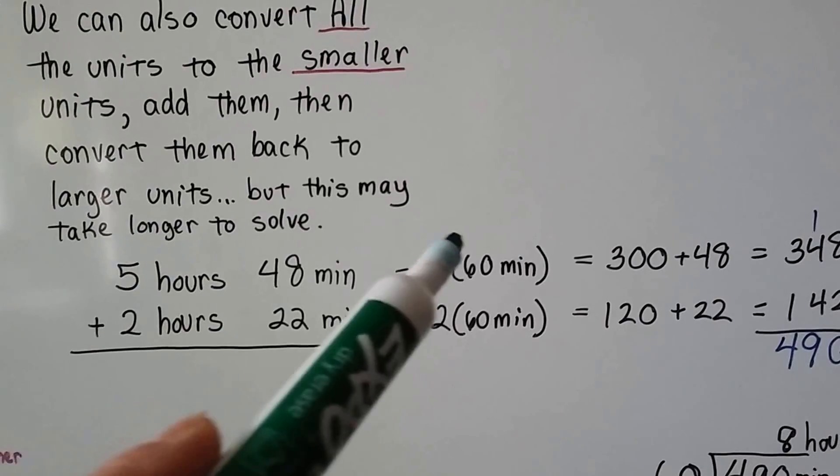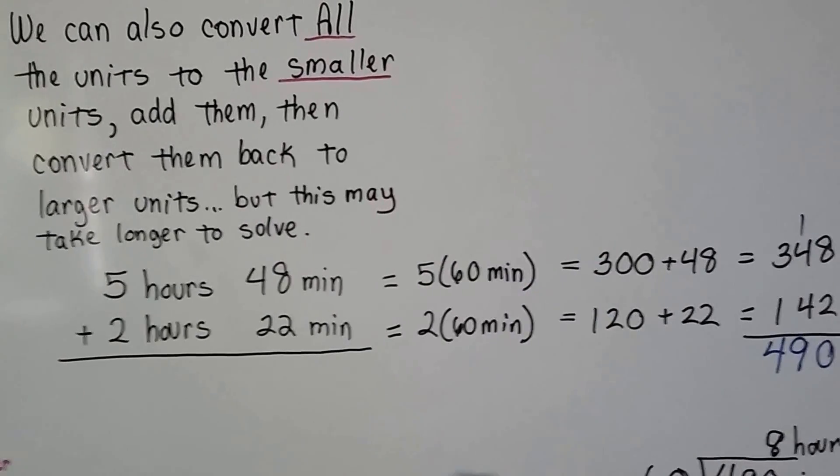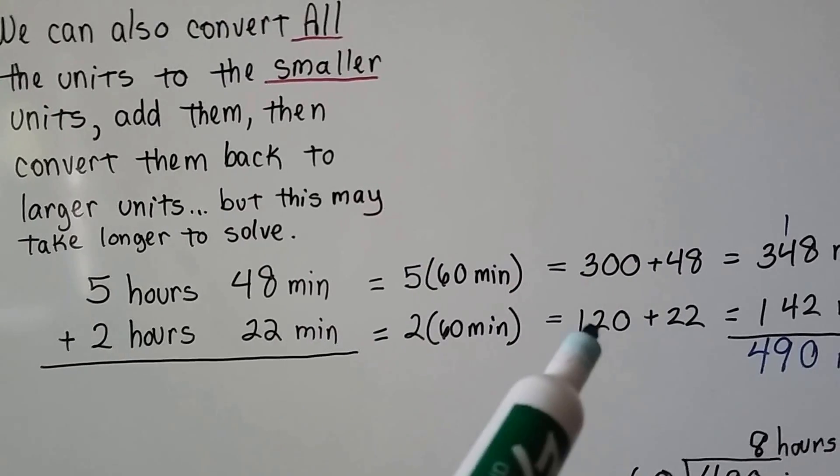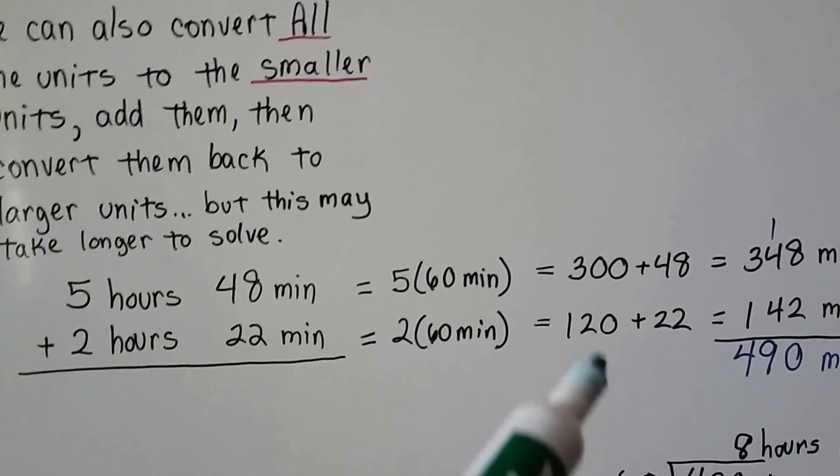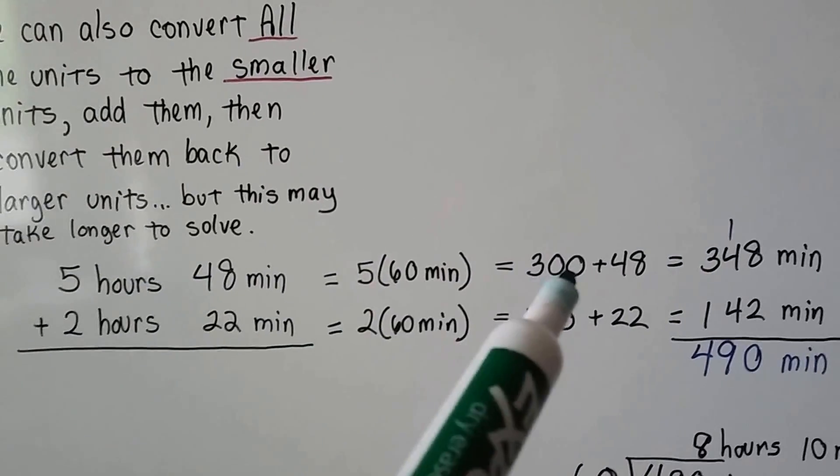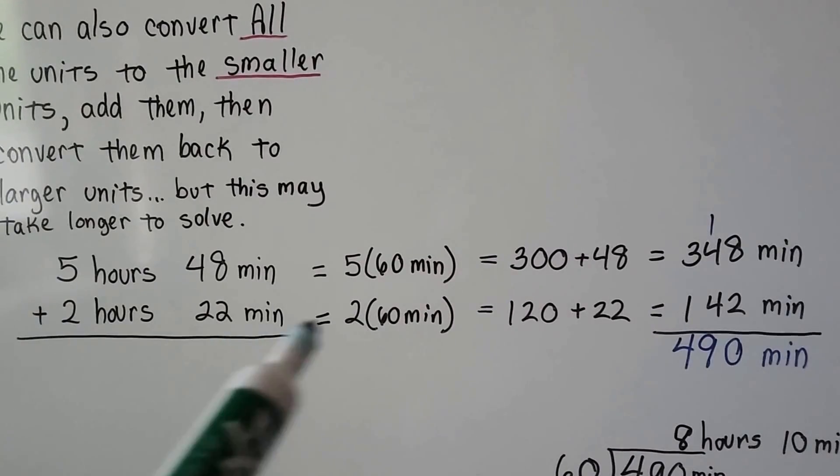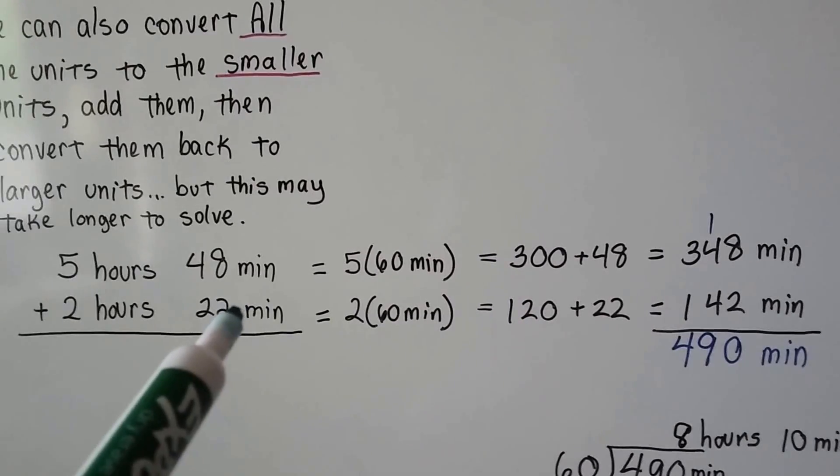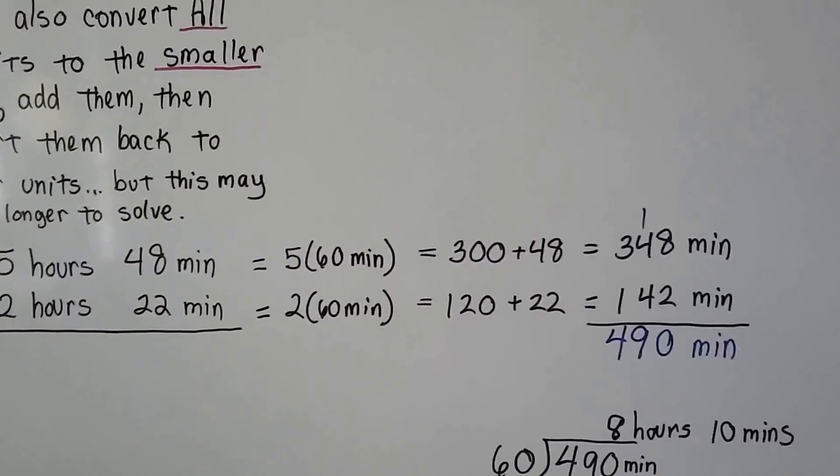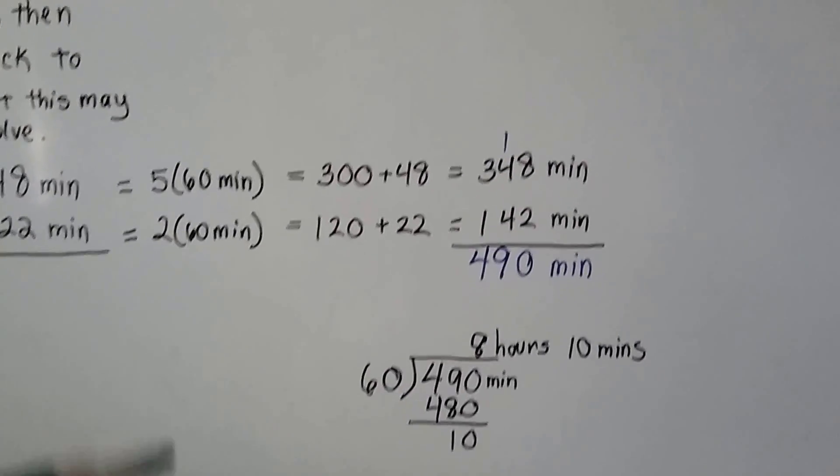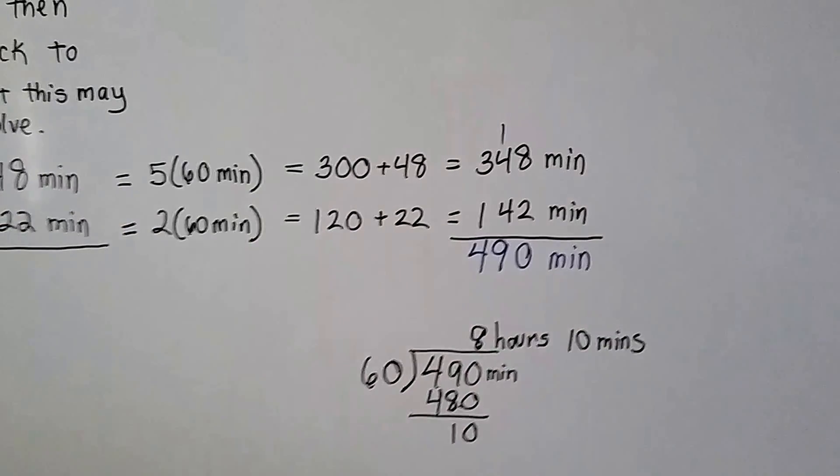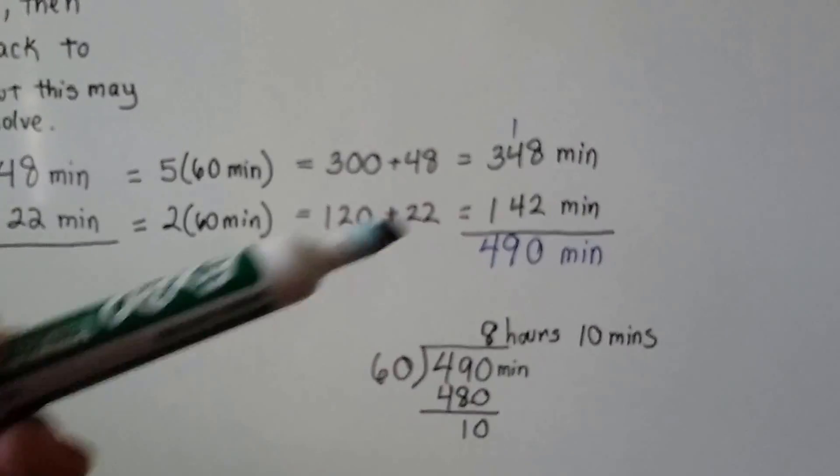We know that there's 60 minutes in an hour, and 5 times 60 is 300, and 2 times 60 is 120. Now we have 300 minutes plus 48 minutes—that gives us 348 minutes. We have 120 minutes plus this 22 minutes—that's going to give us 142. This gives us a grand total of 490 minutes.